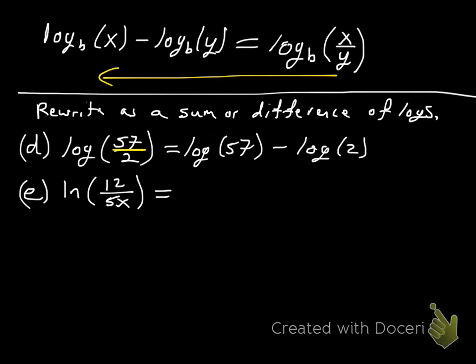ln of 12 over 5x, you see the division. So this is going to be ln of 12 minus ln of 5 minus ln of x. What I did here is I realized it was in the denominator, it was going to be subtraction. So I did have two things in the denominator, a 5 and an x. So that's where the two subtraction signs came from.